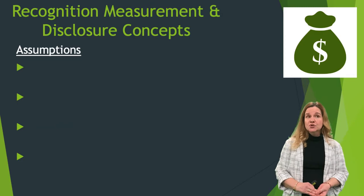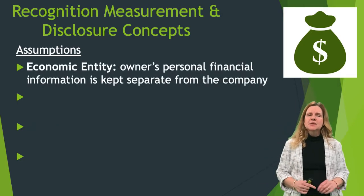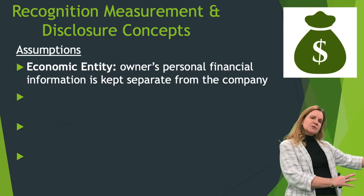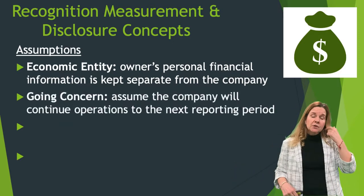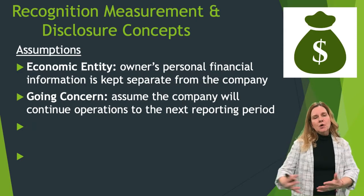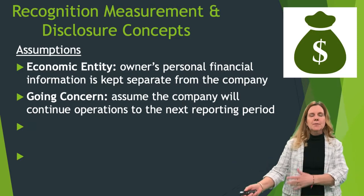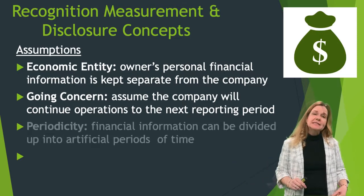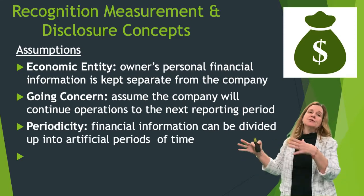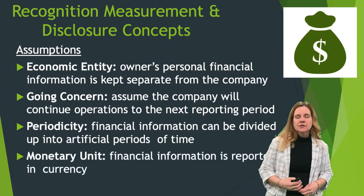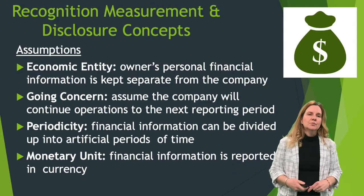Now we move on to recognition, measurement, and disclosure concepts, starting with assumptions. The economic entity assumption — sometimes called the separate entity assumption — means the owner's financial information should be kept separate from the company. Going concern: we assume the company will continue to the next period and not go bankrupt or be liquidated. Periodicity: we divide revenue and expenses into artificial time periods such as months, quarters, and years. And the monetary unit assumption: we record in currency — dollars, euros, whatever currency the company is incorporated in.